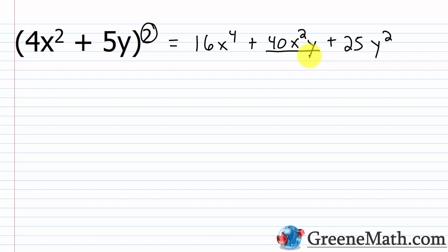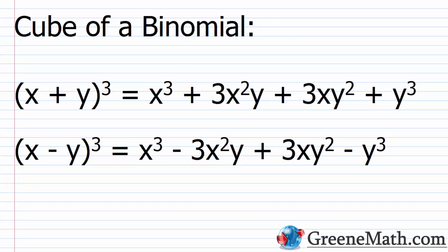You can see how easy it is to just memorize the formula — you see it on a test and you can crank it out really quickly. Now let's talk about the cube of a binomial. If you memorize this, it saves a ton of time, given how long it takes to multiply three binomials together. For x plus y cubed, the result is x³ plus 3x²y plus 3xy² plus y³.